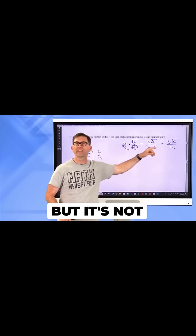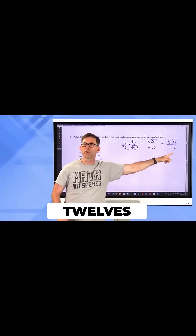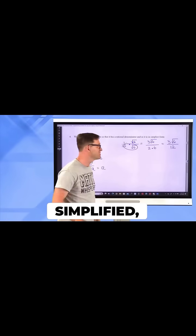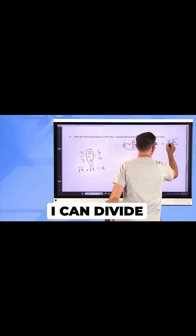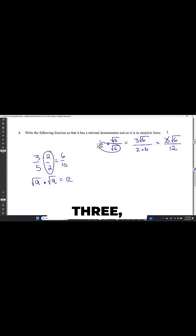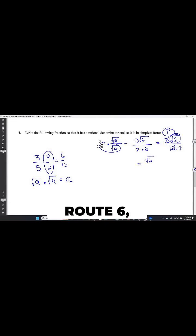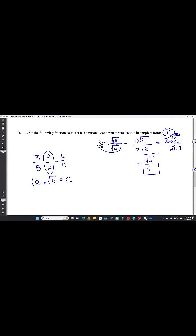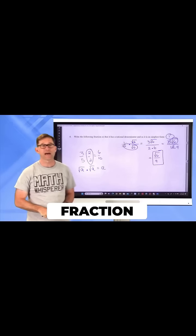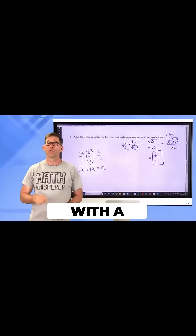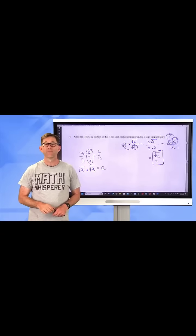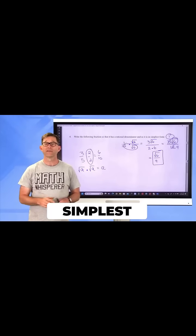But it's not in simplest form because 3 twelfths can be simplified. I can divide that by 3, divide that by 3. And now I have 1 times root 6, which is root 6, all divided by 4. And that is that fraction with a rational denominator and in simplest form.